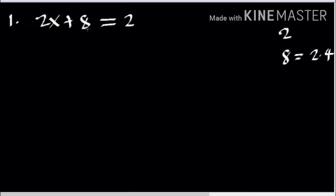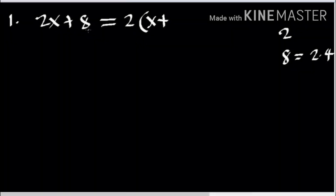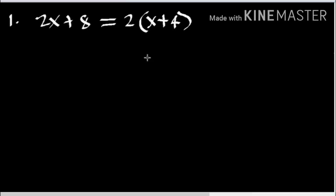Since the second term has no variable, there is no common variable between the terms. So we write the common factor 2 outside the parenthesis. Inside the parenthesis, we write what remains in each term. For the first term 2x, since 2 is factored out, what remains is x. For the second term 8, since 8 is 2 times 4 and 2 is factored out, what remains is 4. So our factored form is 2 times the quantity x plus 4.